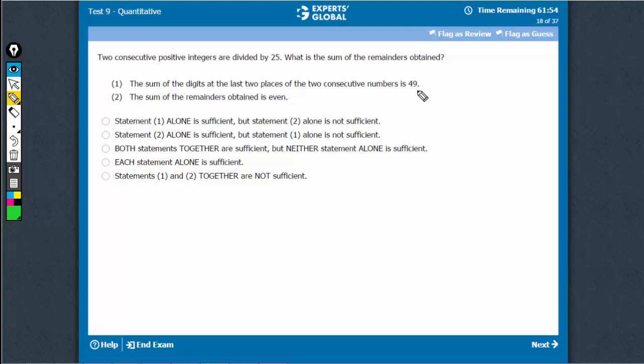The sum of the last two digits of the last two numbers is 49. So that means one would have been 25 and the other would have been 24.